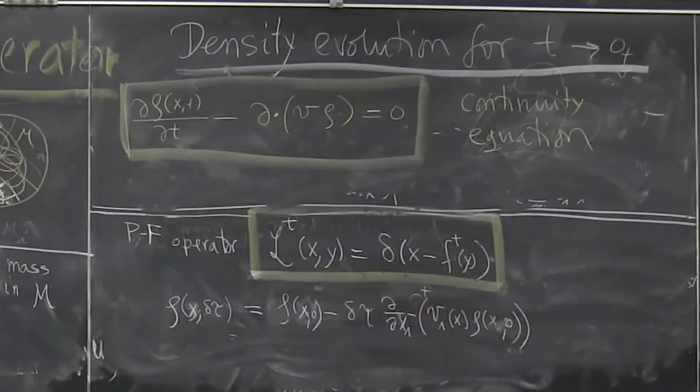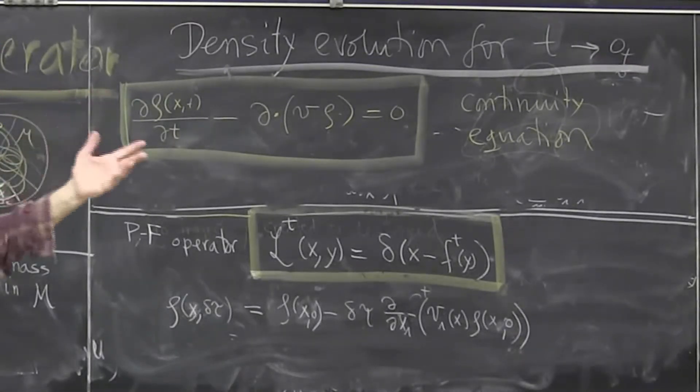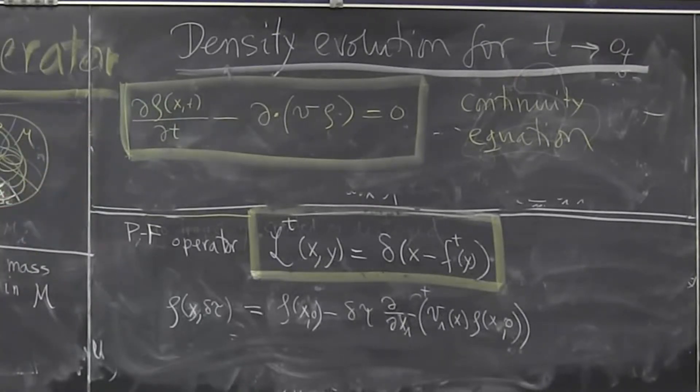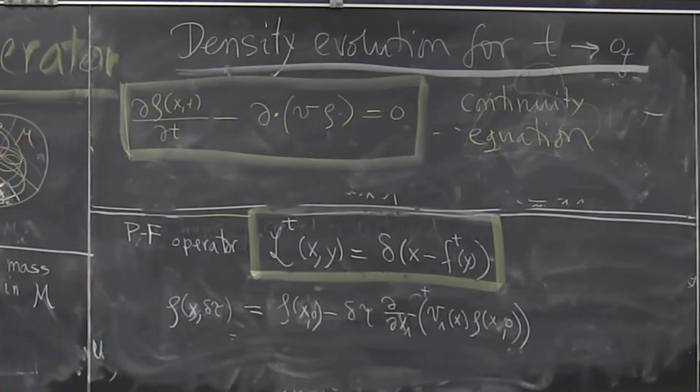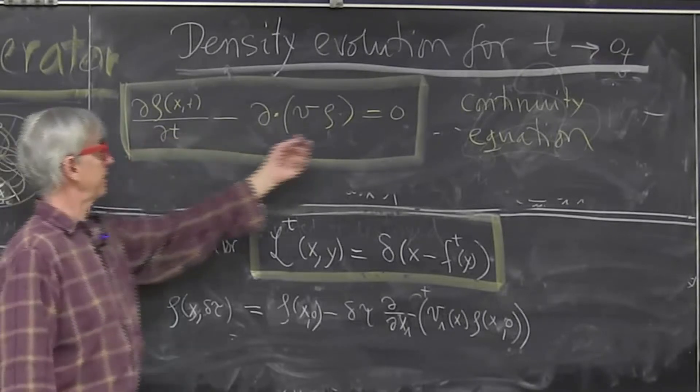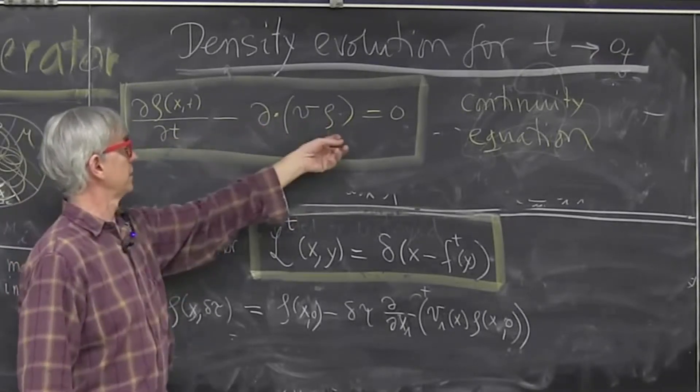You know, so we found it intuitive to think first of the finite time evolution. But whenever you have a finite time evolution, there should be also differential formulation of finite time evolution. The finite time evolution was all embodying the principle that trajectories are not destroyed or created. The only thing that can change is their density. That itself is immutable. But in infinitesimal time, that's a statement of continuity.